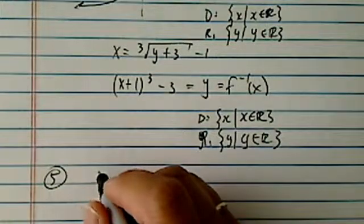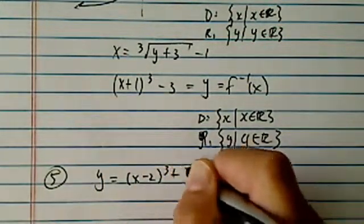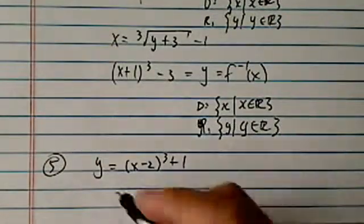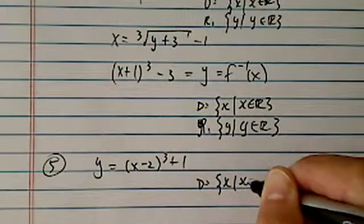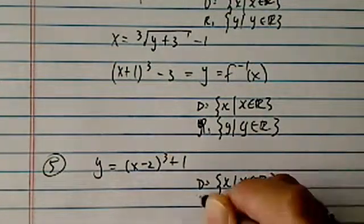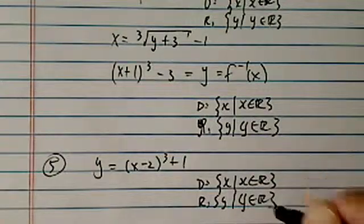I have y is equal to x minus 2 cubed plus 1. Once again, it's a cube, so there's really no restriction. Domain is x, x belongs to the whole real number. Range is that range belongs to the entire real.